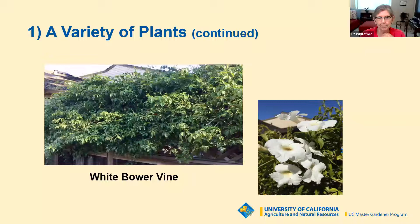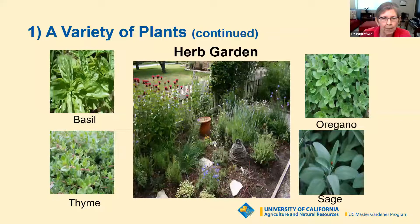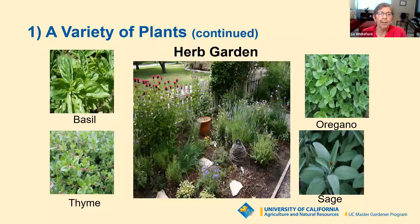Those of you who enjoy herbs could put together an herb garden. Basil, thyme, oregano, sage, and chives all bloom. Bee balm is another option. Just about everything in a well-planned herb garden is blooming — it's a nice thing to put together in your variety of plants to offer pollinators.